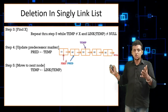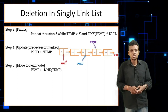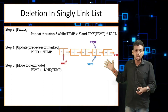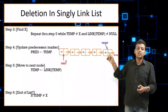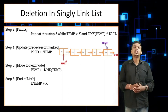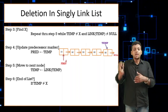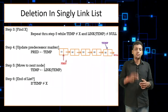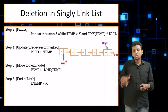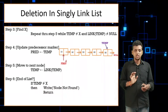When temp reaches x, the condition becomes false and we exit the loop. But if you reach the end of the linked list and still didn't find x, link of temp becomes null and you exit. Step six: if temp is not equal to x after the loop, that means no node was found — write 'node not found' and return.